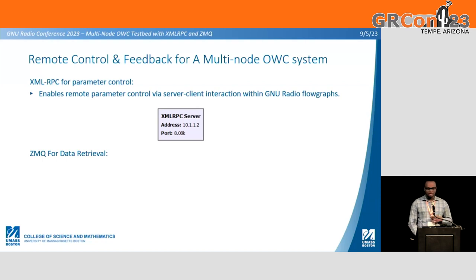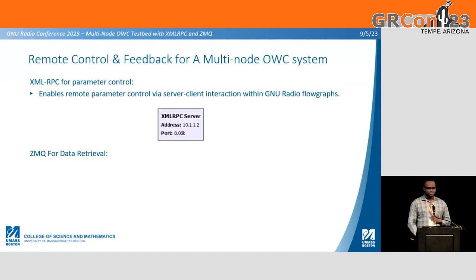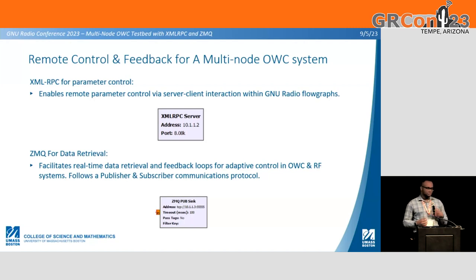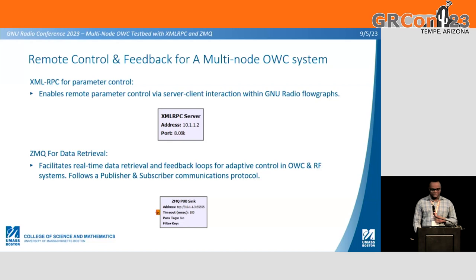XMLRPC enables remote parameter control via server-client interaction within GNU Radio flow graphs. All you have to do is configure the address you want to connect to, and within the Python script you can call upon the XMLRPC server to update any relevant flow graph parameters. We also use ZMQ for data retrieval. ZMQ facilitates real-time data retrieval and feedback values for adaptive control. ZMQ works on a publisher-subscriber communication protocol, and we employ the ZMQ PubSink in our testbed.